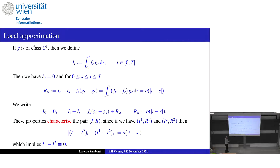This line is a weak formulation: it requires less on your object but still retains interesting information. Note that I don't have the derivative of g anymore in this line, yet these properties characterize the pair (I, R). Given f and g, there is at most one such pair. This looks like a promising way of approaching a definition of this object when g is not necessarily differentiable.